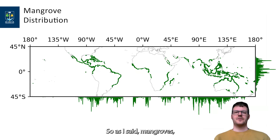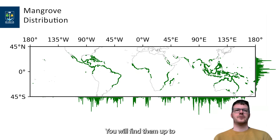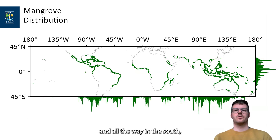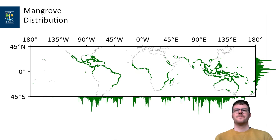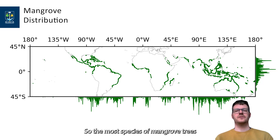Mangroves you will find mostly in the tropical and sub-tropical regions — that is, pan-tropical, so around the globe. You will find them up to Florida in the north, and all the way south to South Africa or even the North Island of New Zealand. The hotspot of biodiversity of mangroves — so the most species of mangrove trees — you will find in Southeast Asia.